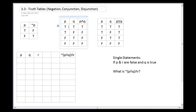There are four possibilities because P has two possibilities and Q has two — two times two gives four. So I make P true for the first two rows and false for the last two. Then, knowing P is true twice, Q can be either true or false each of those times. And when P is false twice, Q is also going to be true or false each of those times.